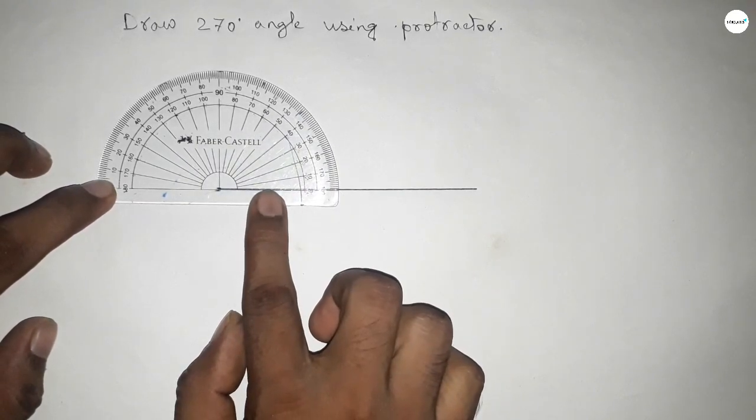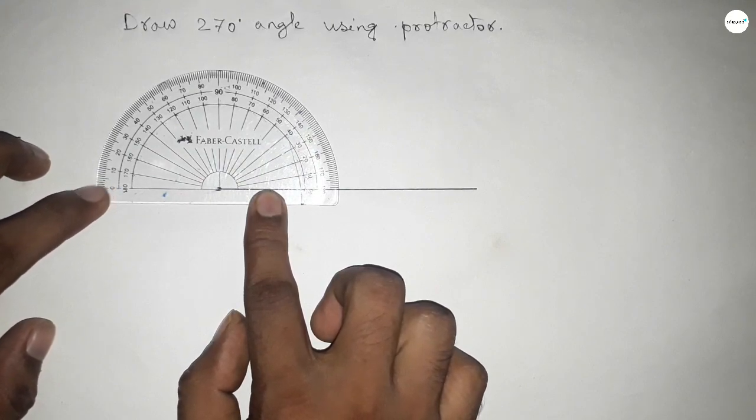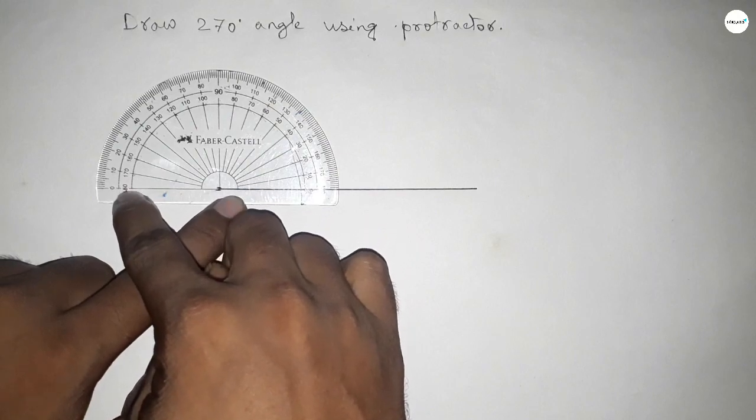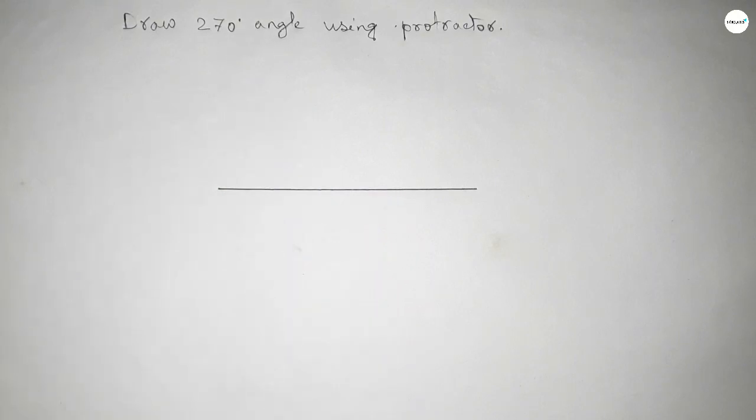This is 180 degrees total. But we have to draw a 270-degree angle. So if we add a 90-degree angle with 180 degrees, then we can get 270 degrees.